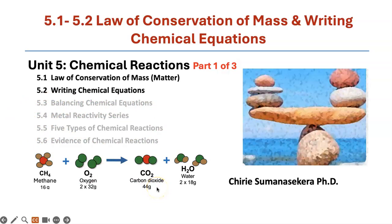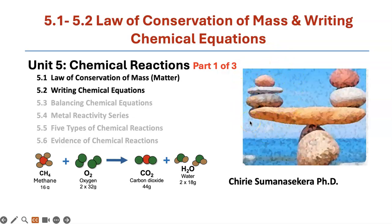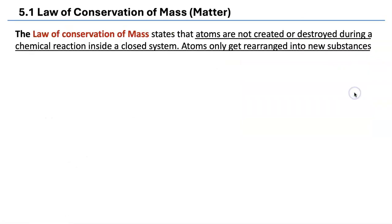This unit is about how to figure out, according to the law of mass conservation, that the number of atoms at the beginning of a reaction is the same as the number of atoms at the end of the reaction. The law of mass conservation states that atoms are not created or destroyed during a chemical reaction occurring inside a closed system.